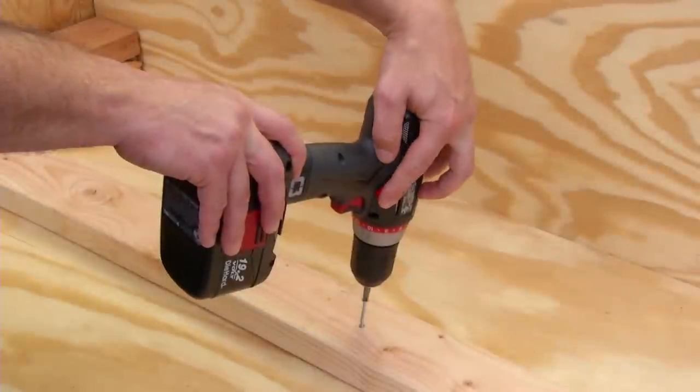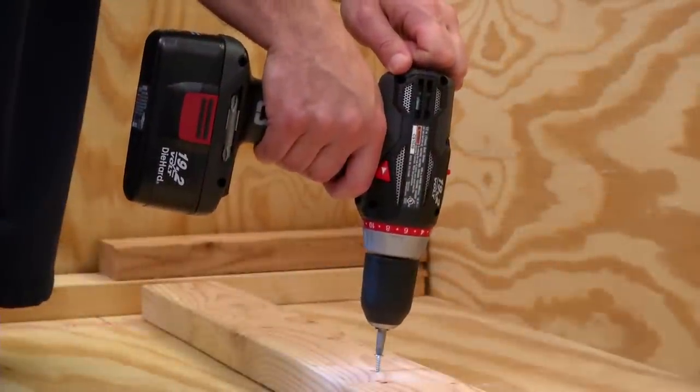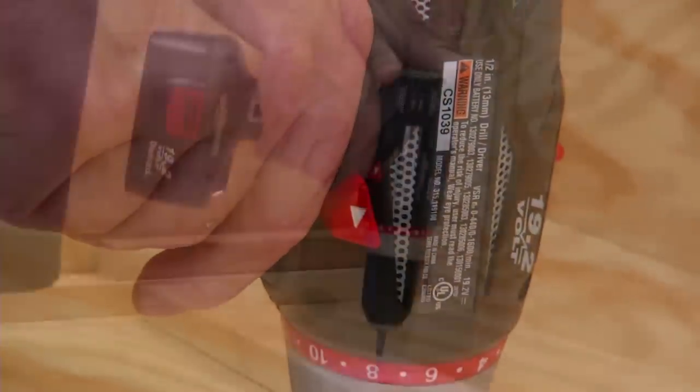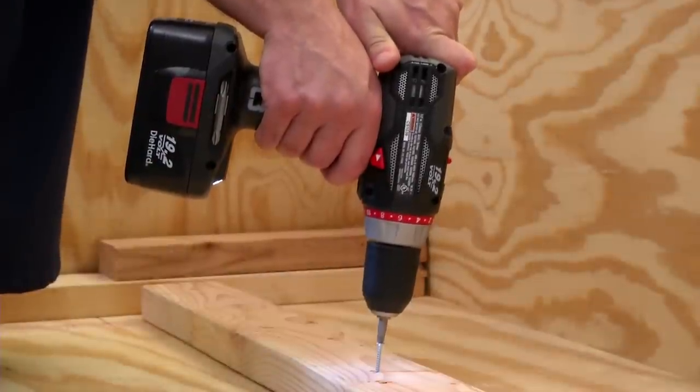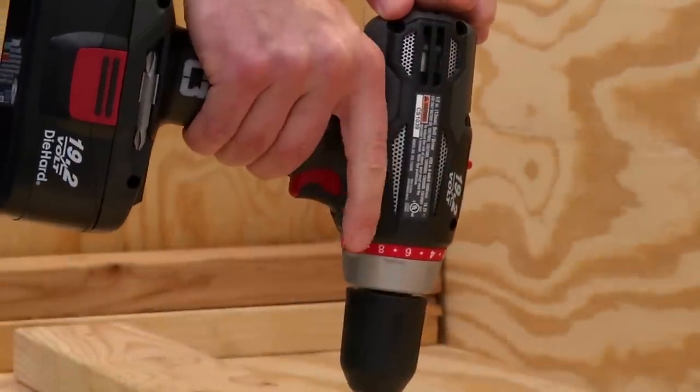A switch on the handle will change the direction you are drilling. Forward drives the fastener in with a clockwise spin. Set it to reverse to back out the screws, or to back out your bit if it sticks. You may also have a neutral position that locks the trigger. This prevents accidents when you're not using the drill.